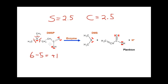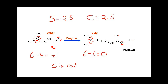Now I'm going to go to the product side and do the same thing. Cutting the bonds for sulfur in DMS gives 6 minus 6, which is a zero oxidation state. So I can see that sulfur is reduced in this process — the oxidation number goes from +1 to 0 — which means that something else must be oxidized.